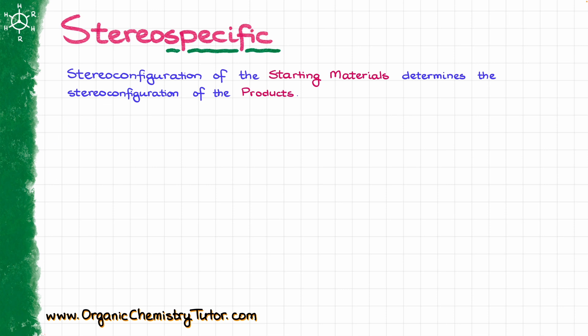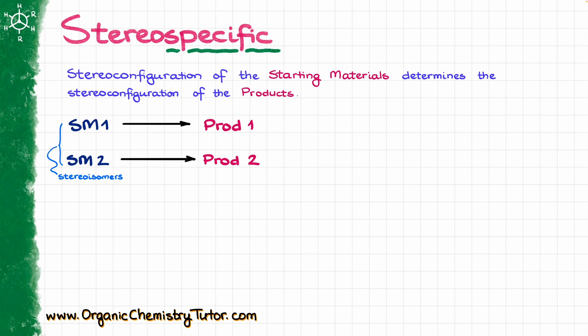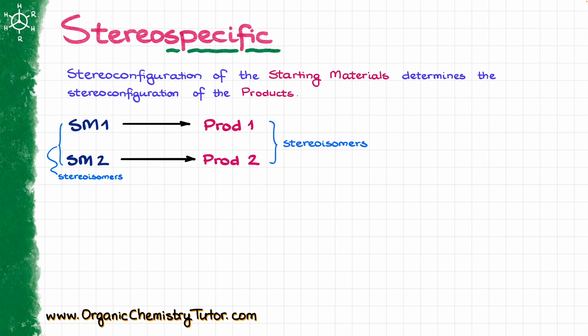So what I mean is that if we have two different starting materials and those starting materials are stereoisomers — let's say enantiomers or diastereomers — and they give corresponding products in the course of some reaction, then those products are also going to be stereoisomers of each other. The important thing to keep in mind is that starting material 1 will always give you product 1 and not product 2. Likewise, starting material 2 will give you product 2 and not product 1.